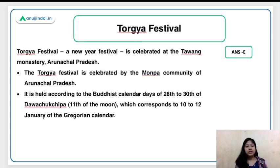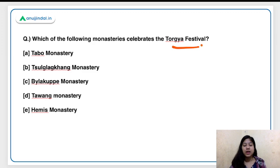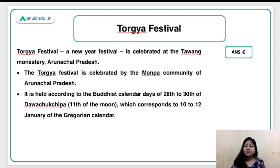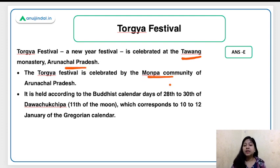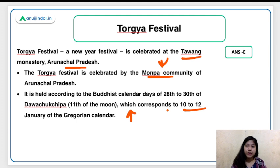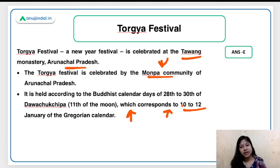Which monastery celebrates the Torgya festival? The right answer is Tawang Monastery, which celebrates this New Year festival of the Buddhist community. It is celebrated by the monks of Tawang Monastery in Arunachal Pradesh. The community that celebrates it is the Monba community — do remember this. According to the Buddhist calendar, this festival falls around January 10th to 12th.